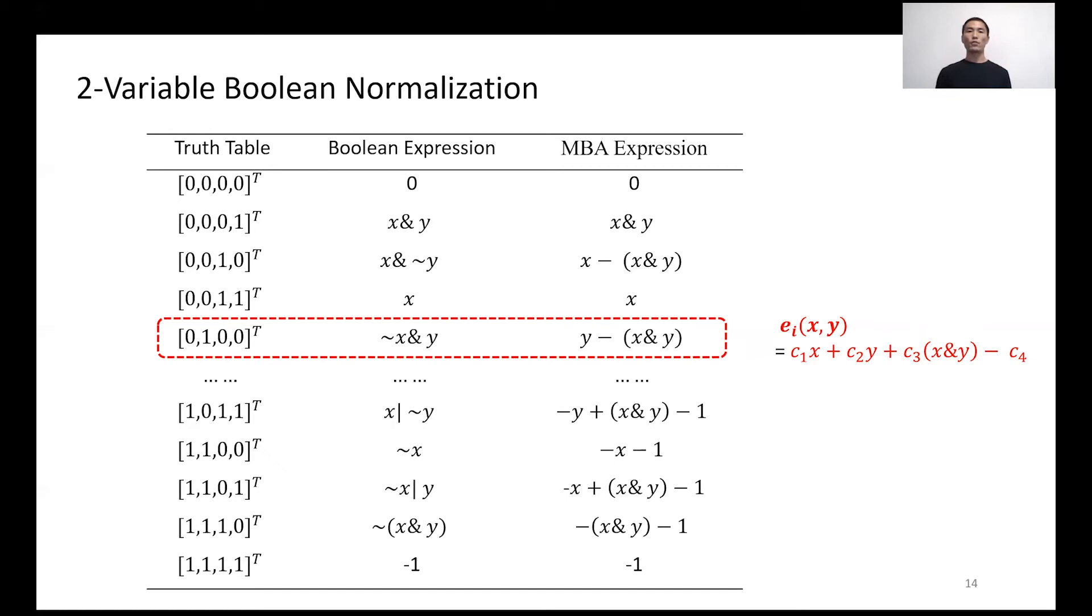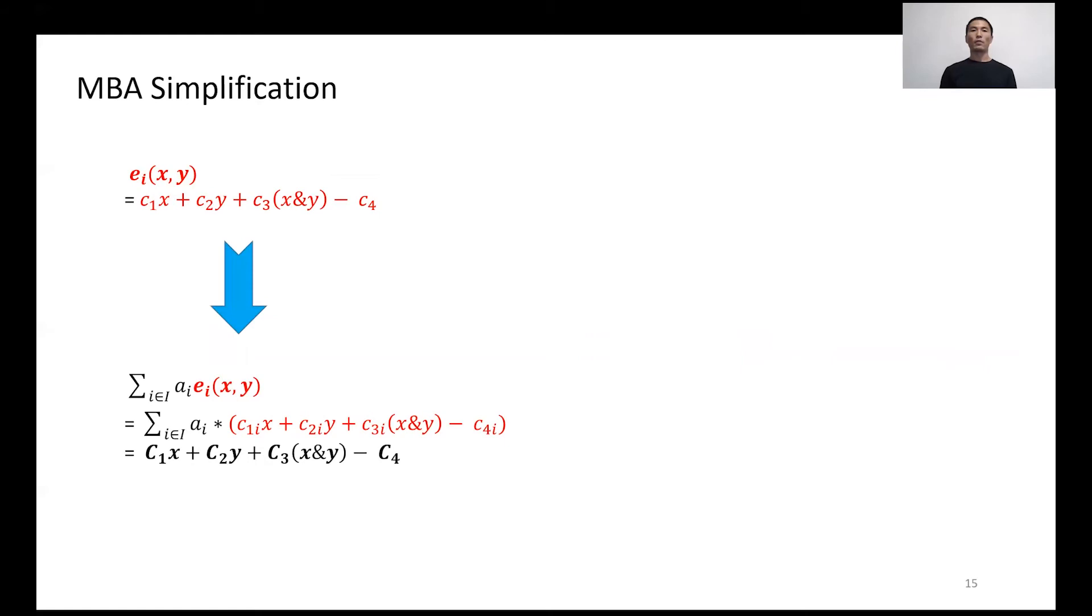This finding forms the foundation of all simplification methods. The expression summation of A sub i times E sub i will be reduced to a simple form C sub 1 times X plus C sub 2 times Y plus C sub 3 times X AND Y minus C sub 4, which includes only four terms: X, Y, X AND Y, and a constant. According to the two-way feature, this transformation also holds in n-bit space.